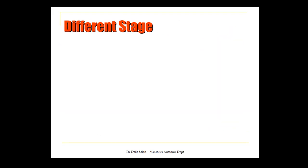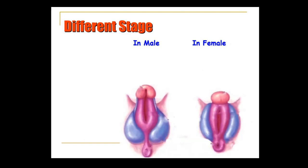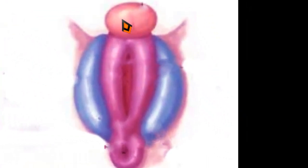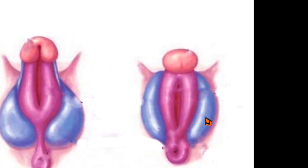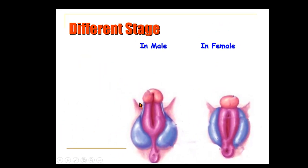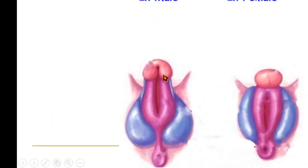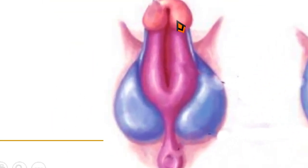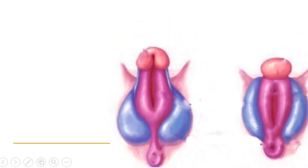In the differentiation stage, both male and female share the same structures initially: the genital tubercle, the two urethral folds, the anal fold, and the genital swellings. This indifferent appearance is identical in both male and female at this stage.